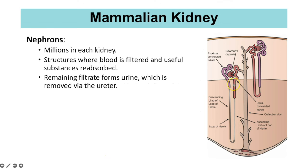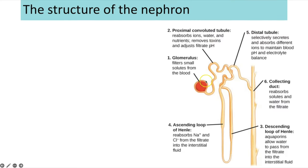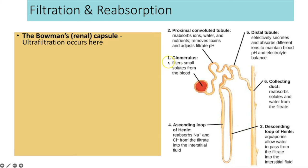Here we can see one nephron inside the medulla. We begin with the Bowman's capsule, or renal capsule, which is a bowl-like structure containing lots of blood vessels. The capillaries that make up the glomerulus are where ultrafiltration occurs — a really high blood pressure forces out water and small molecules such as glucose and urea into the renal capsule.